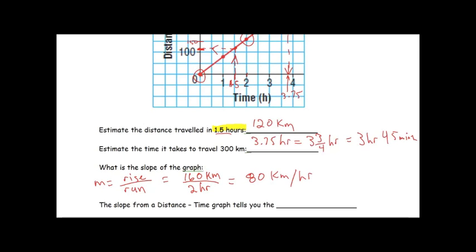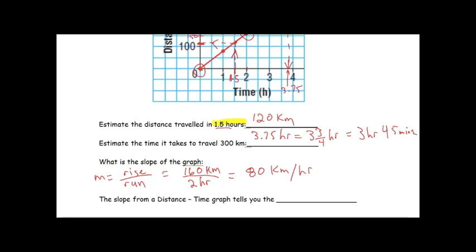This is a good thing to note from the physics world: if you are given a distance time graph, if you find the slope from a distance time graph, that is going to tell you the speed or how fast something's going. So 80 kilometers an hour is the slope, that is also the average speed of that car. Let's move over to the back side.